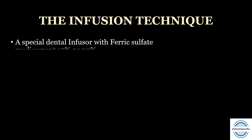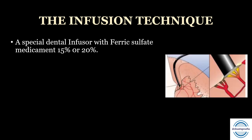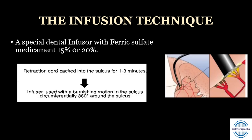The infusion technique uses a special dental infuser with ferric sulfate medicament (15 or 20%). The retraction cord is packed into the sulcus for one to three minutes, then the infuser is used with a burnishing motion circumferentially 360 degrees around the sulcus, achieving lateral displacement.